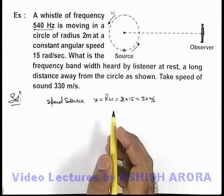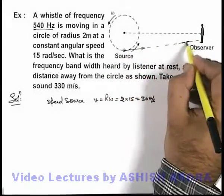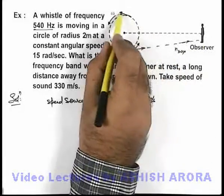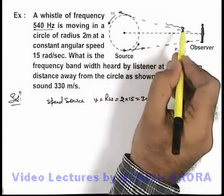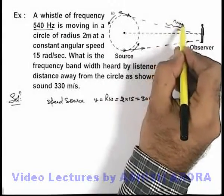Now, in this situation, when the source will be approaching towards the observer, the frequency which the observer will receive will be maximum. And when it is receding away from the observer, the frequency received from the source corresponding to this position will be minimum.